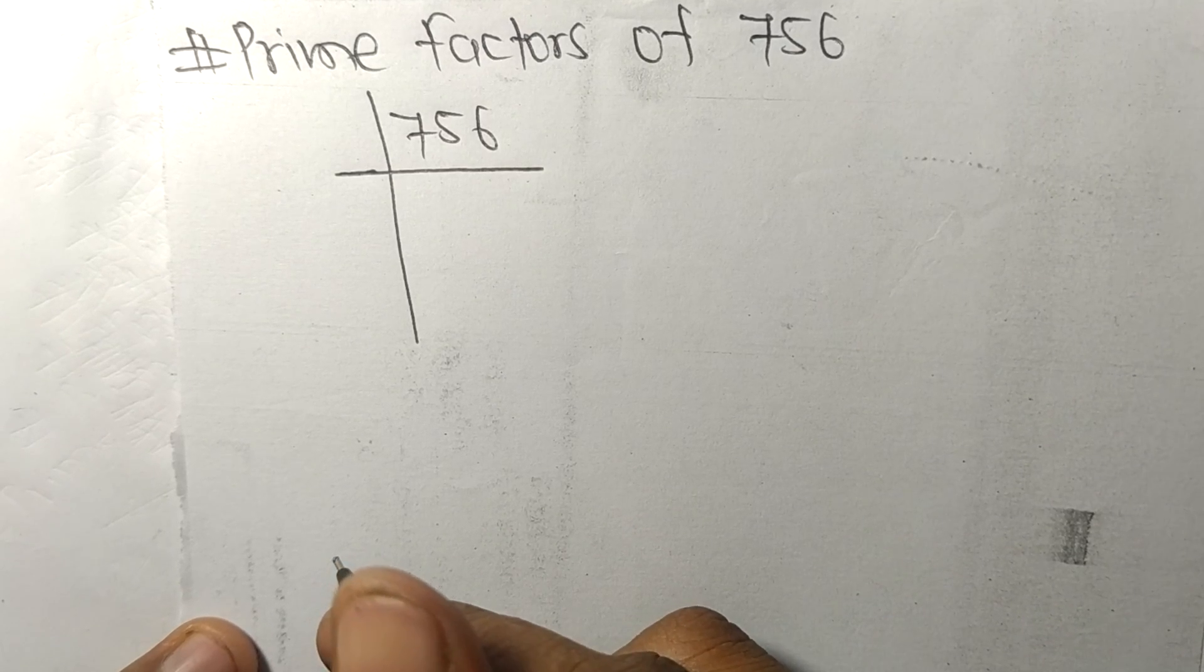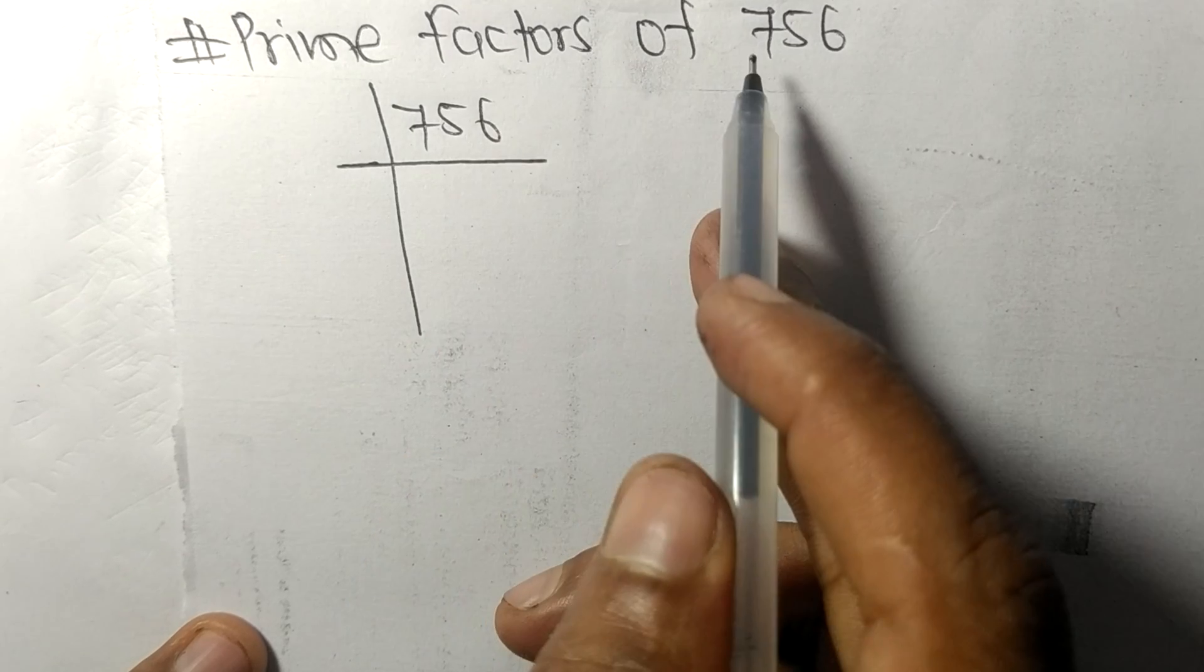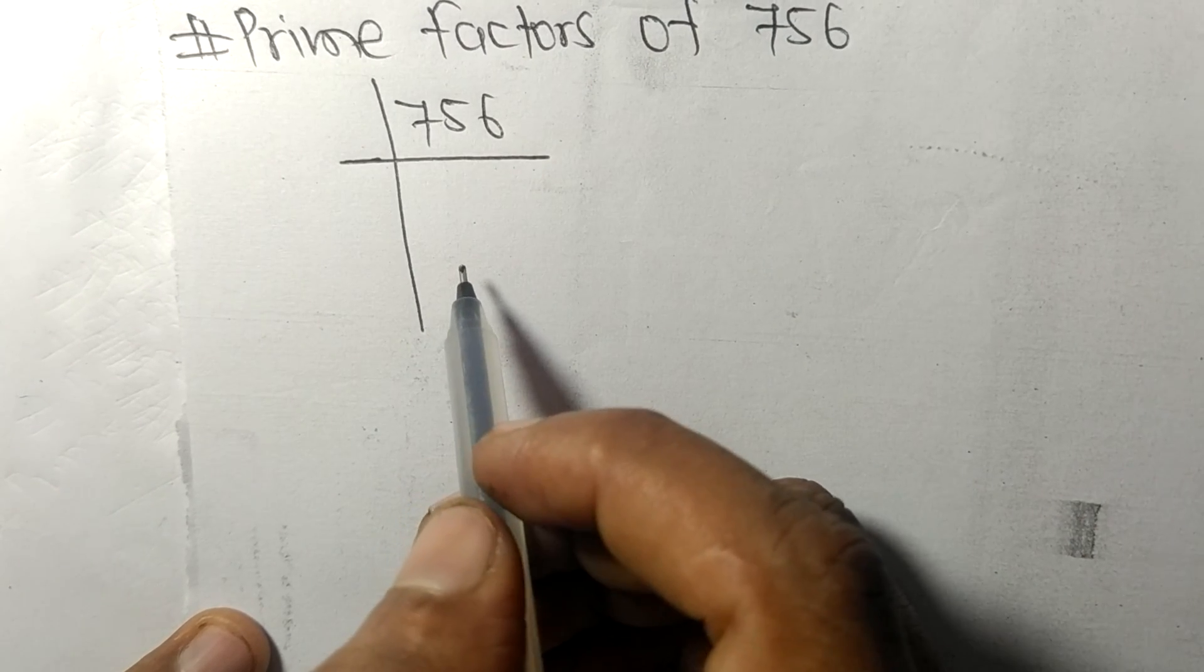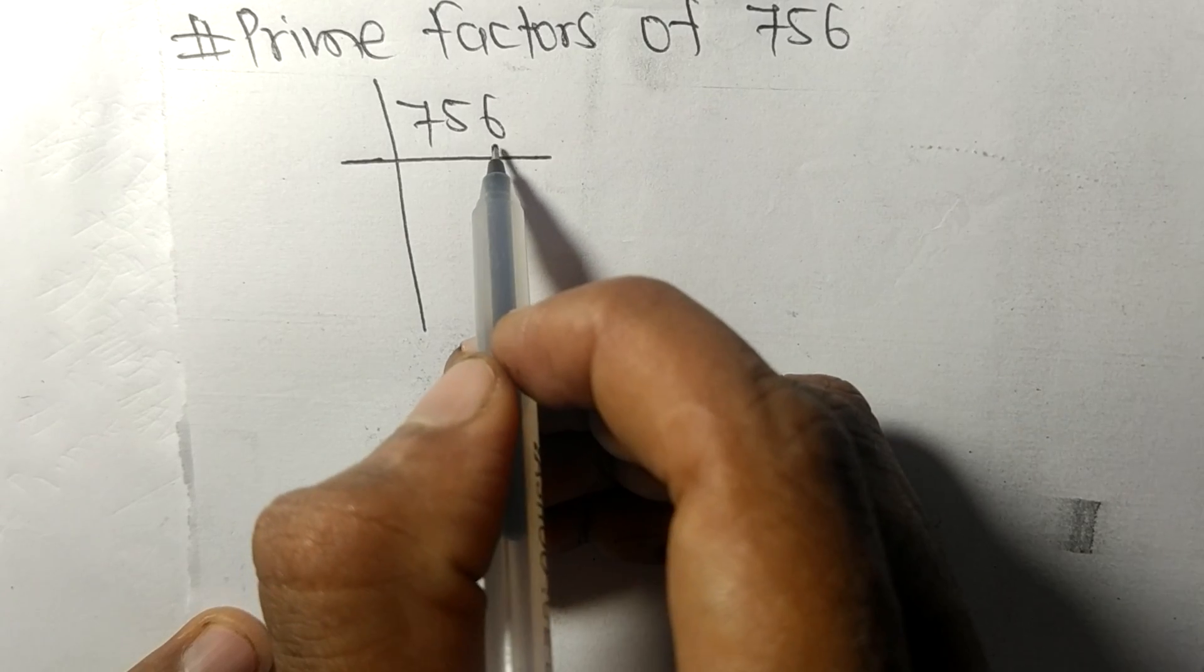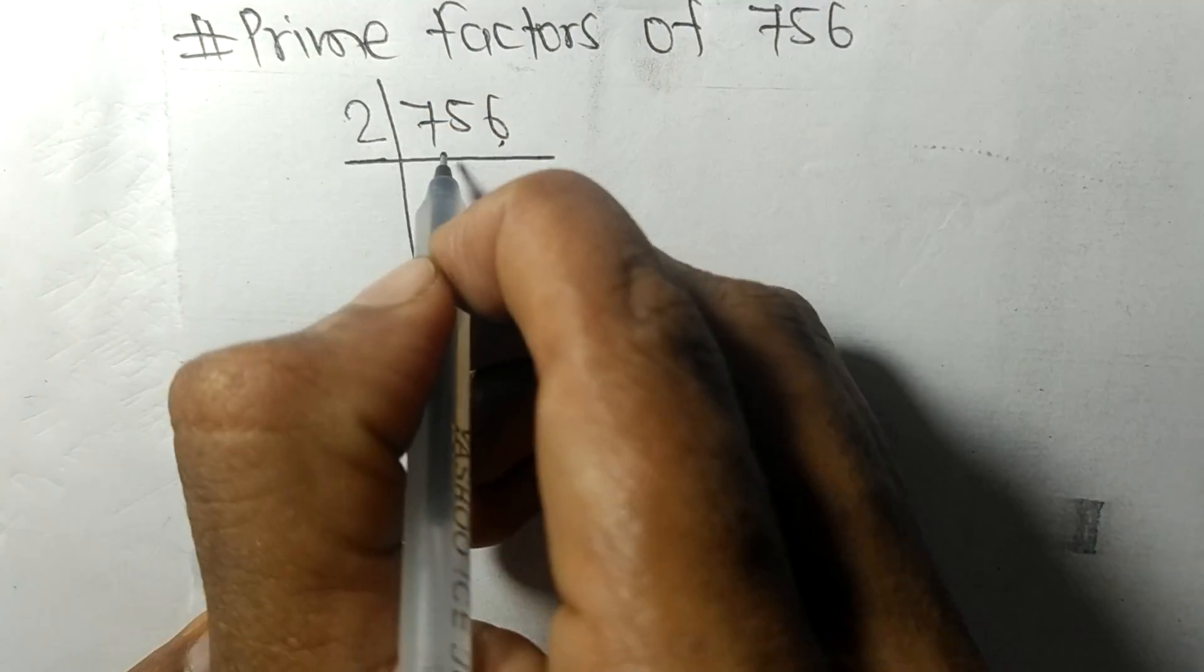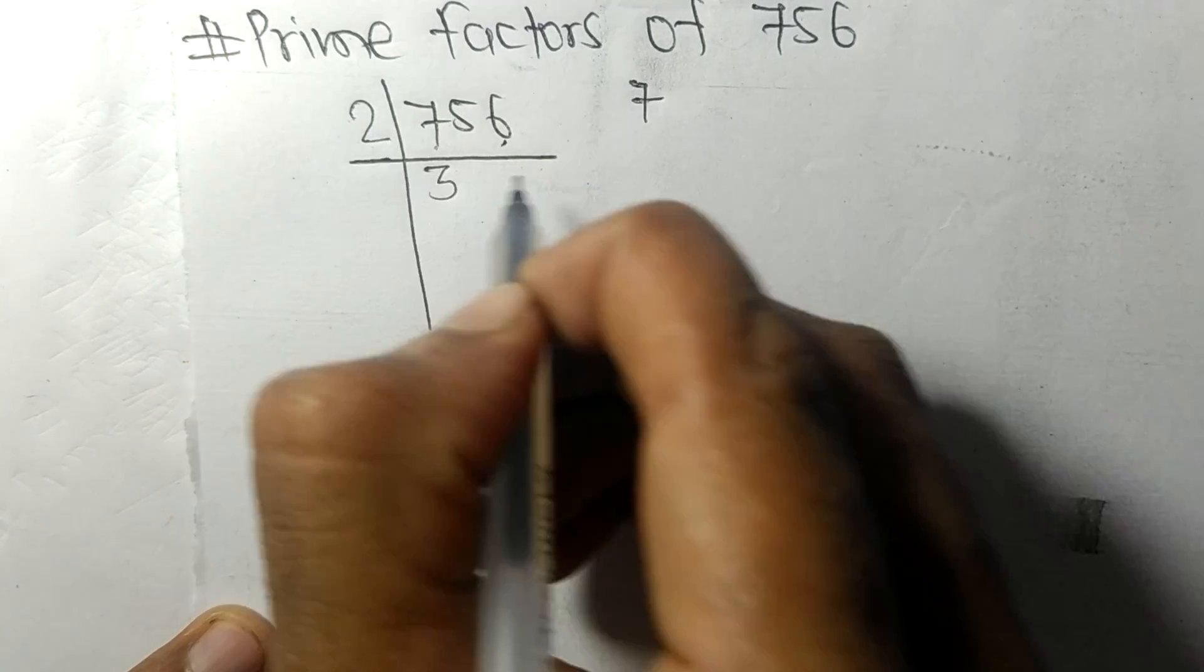Today in this video we shall learn to find the prime factors of 756. It contains an even number 6 at the end, so this whole number is divisible by 2. First we have 7, so 2 times 3 equals 6 remainder 1 and 5, 15. So 2 times 7 equals 14 remainder 1 and 6, 16. 2 times 8 equals 16.